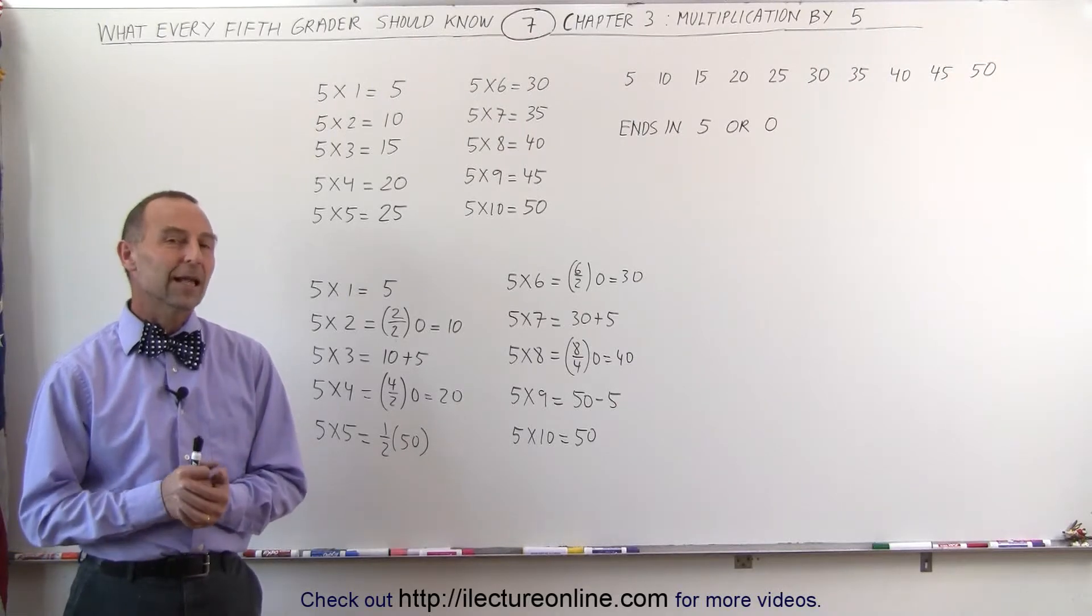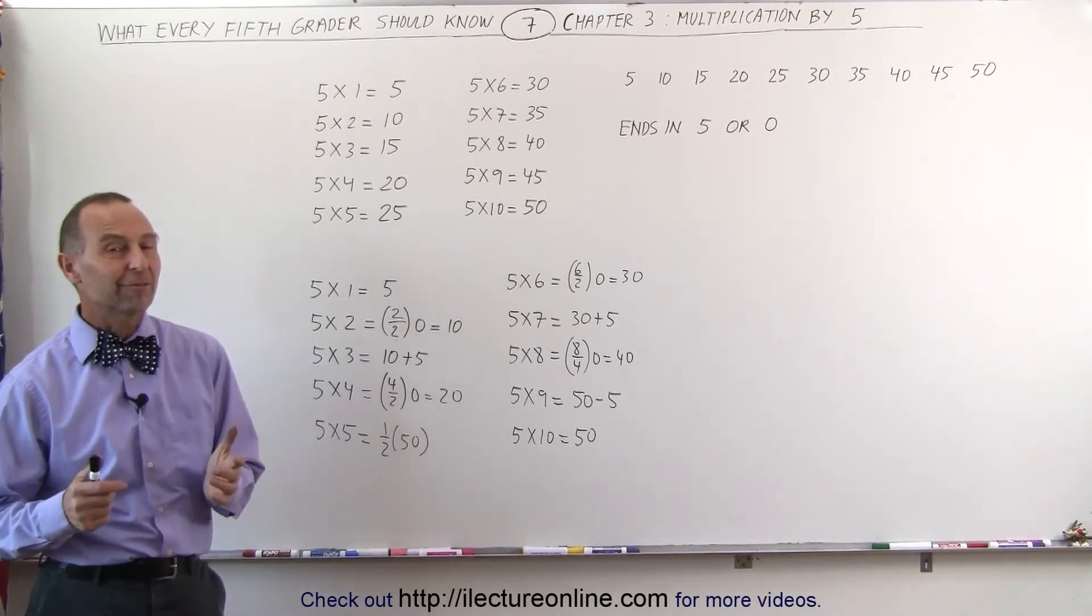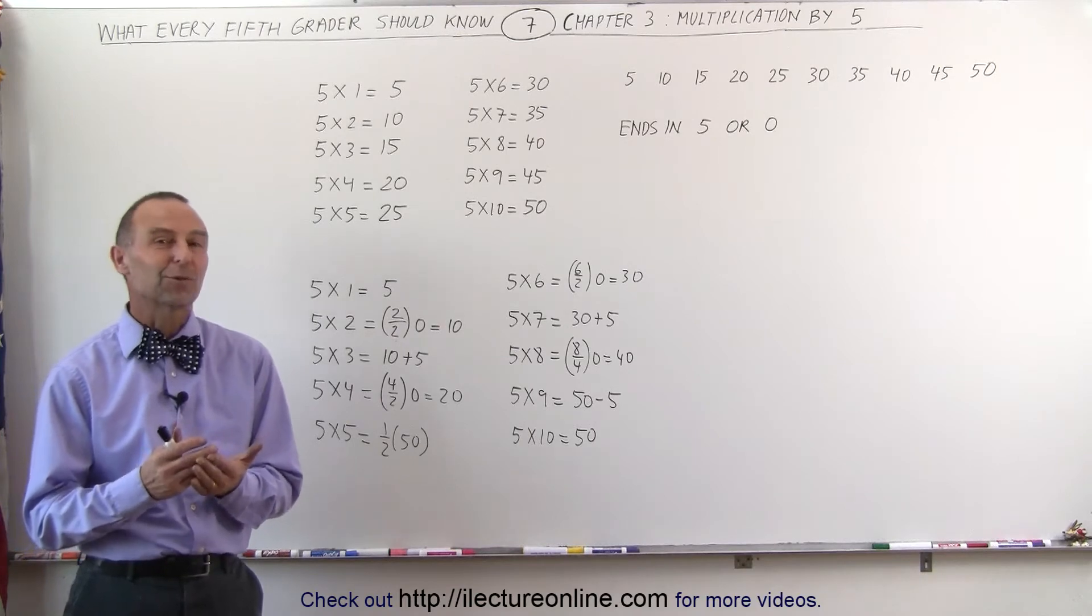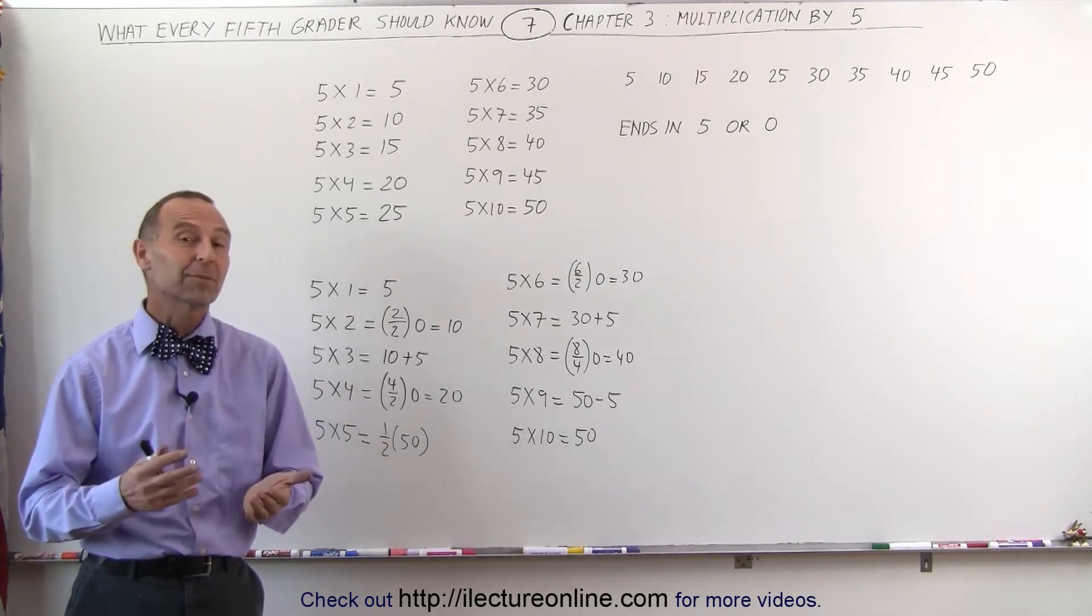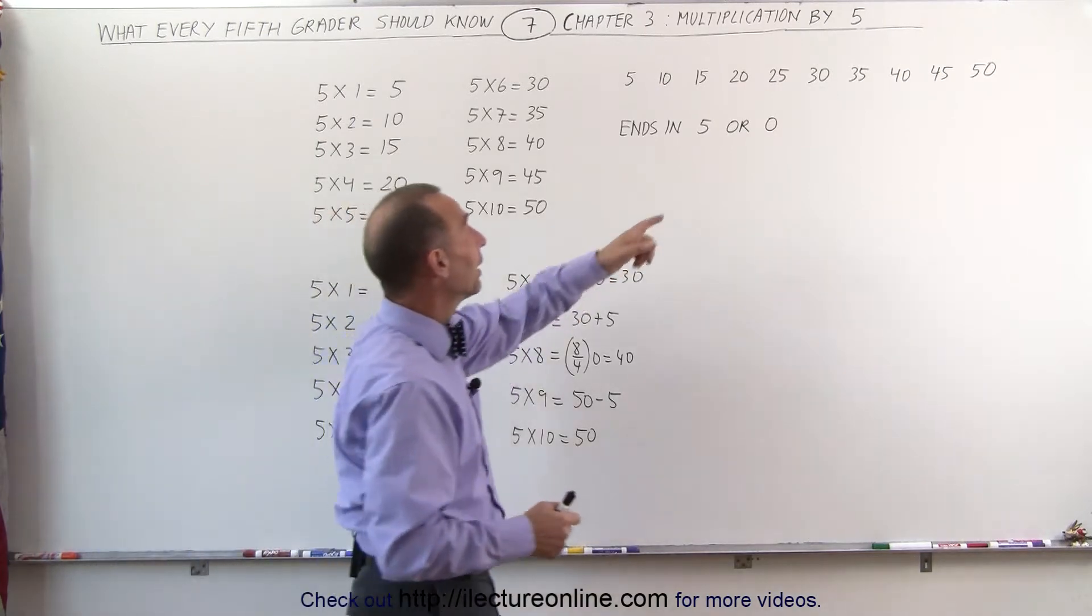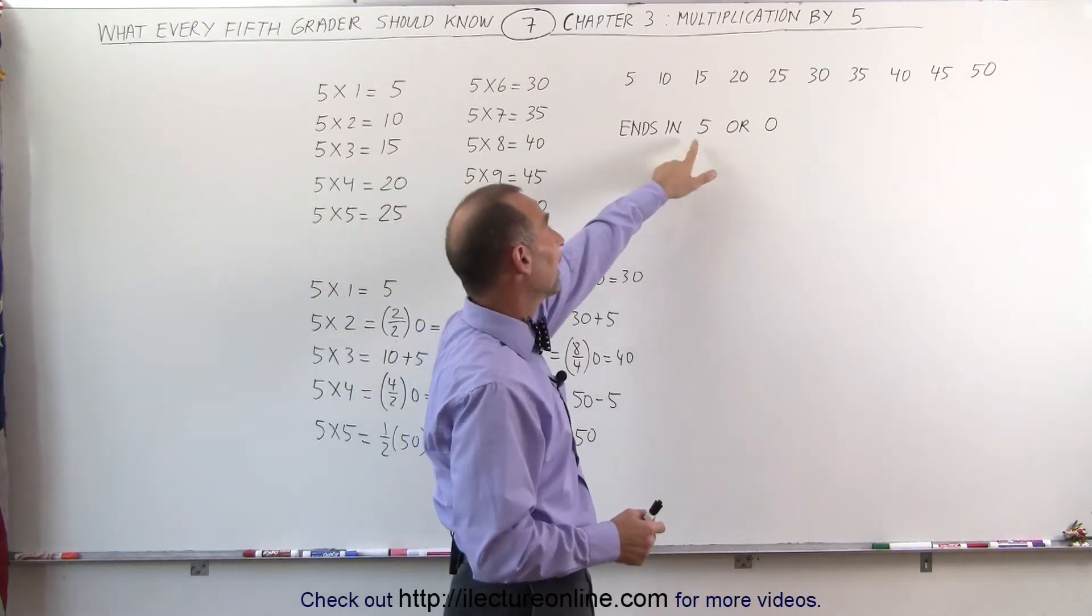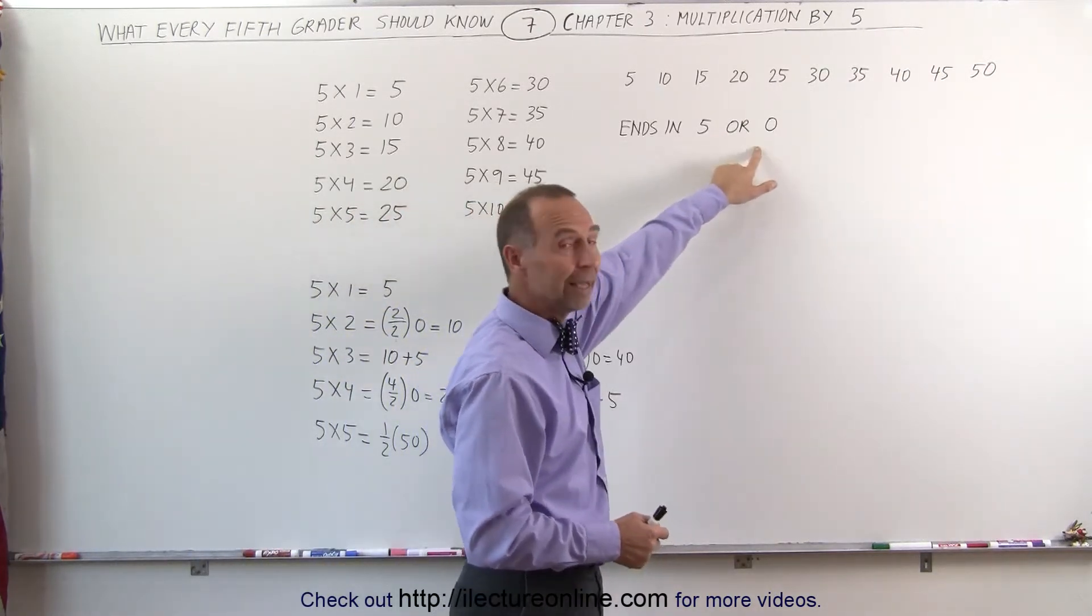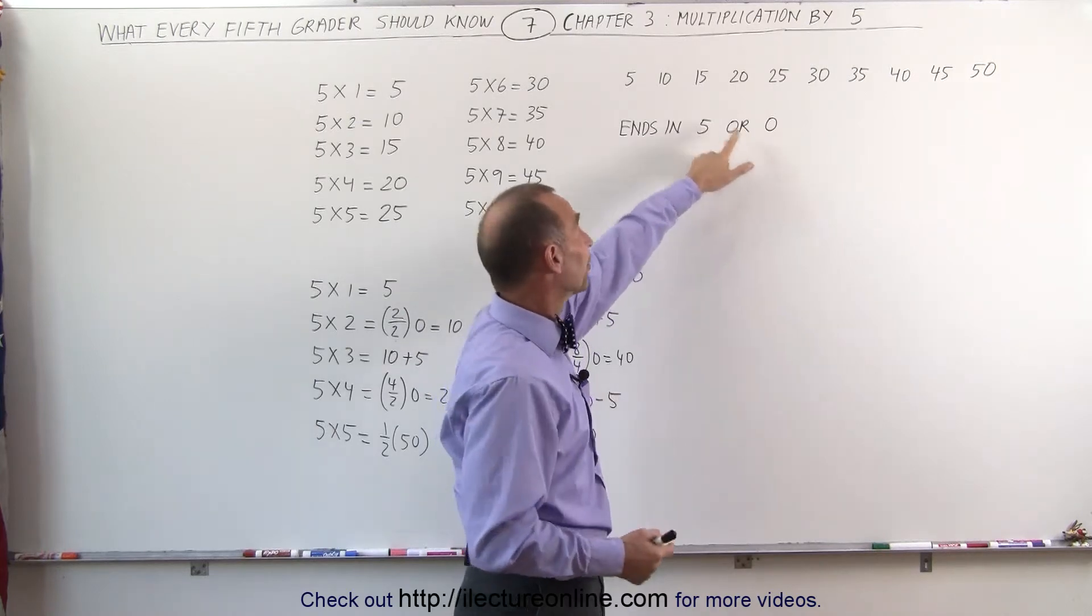Welcome to ElectronLine, and now let's look at multiplication by 5. Remember, multiplication by 5 was one of my favorite multiplication tables because it was so easy. All I had to do is remember that every answer ends either in a 5 or a 0, and that you simply add it by 5s.